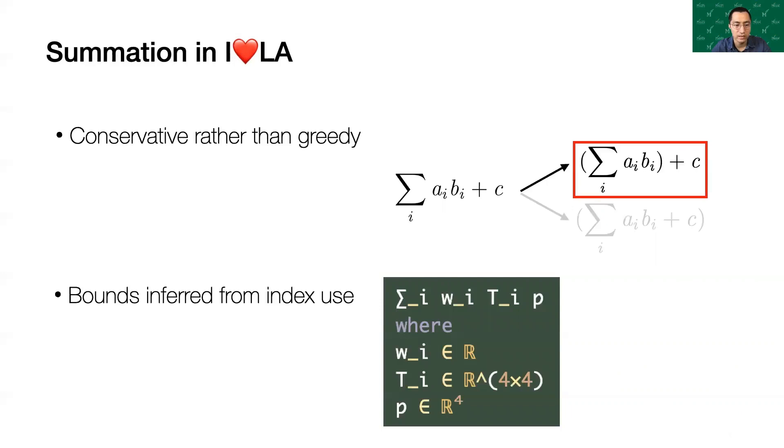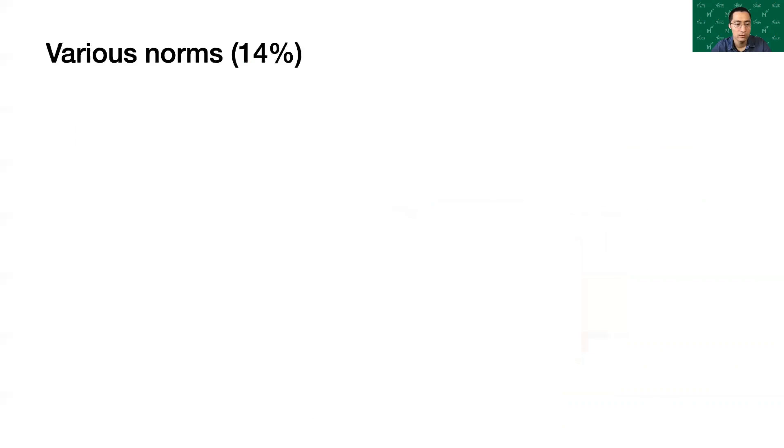Summation in I❤LA takes its bounds from the use of the index in the summand. In this linear blend skinning example, W is the sequence of scalars and T is the sequence of matrices. They have the same size.